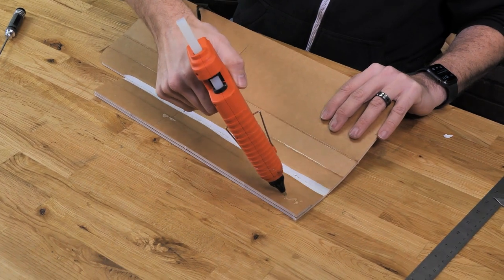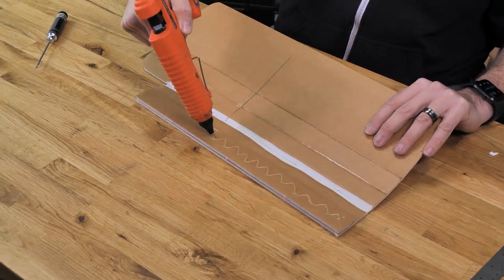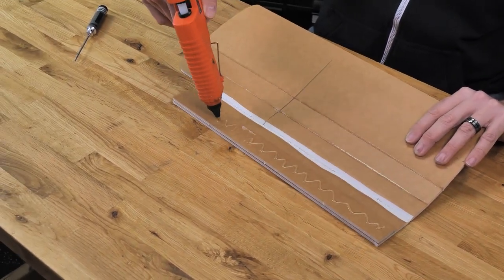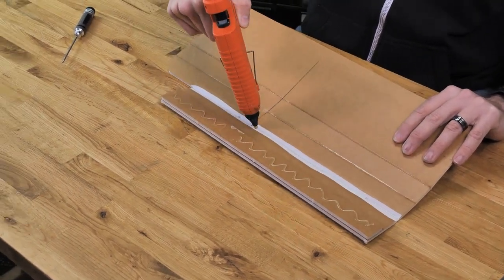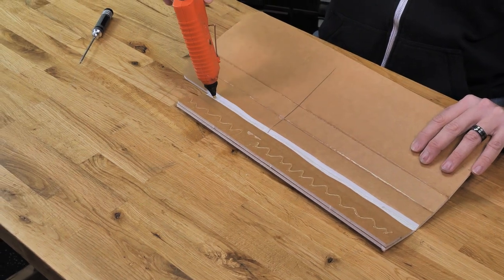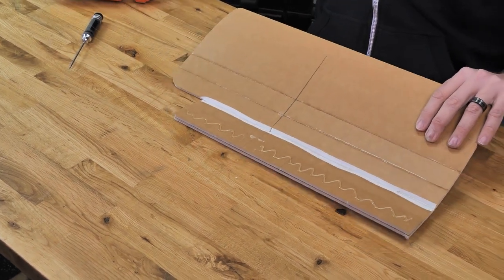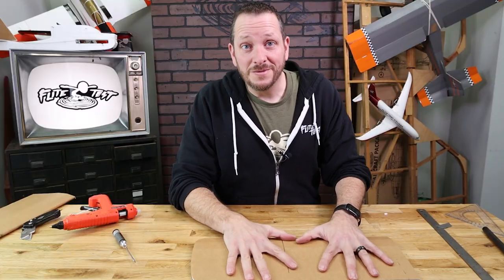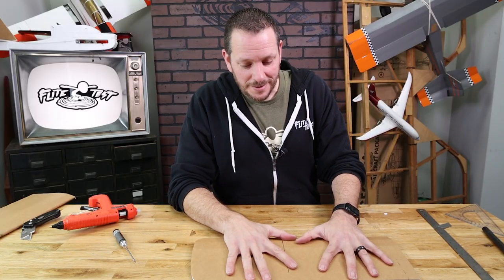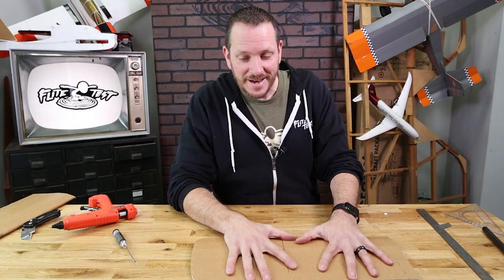We're going to place a bead of glue right over top of the spar, hop over the score line, and right down the center of the leading edge. Back down to the table again. This time we're going to hold it firmly for a good 30 seconds to a minute, making sure the glue fully dries before lifting up.